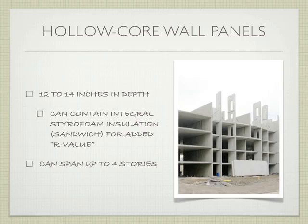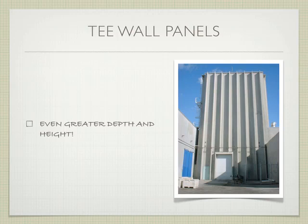We can move from solid wall panels into hollow core wall panels — same technology as between the standard slab and the hollow core slab, just in wall panels. These are 12 to 14 inches in depth and can contain integral styrofoam to increase insulation value, usually some kind of proprietary system. They can span up to four stories in height. You can also move into T wall panels — the same elements we talked about as horizontal slabs, now used vertically. Has anyone seen a building that looks like this? Fry's Electronics is a great example.